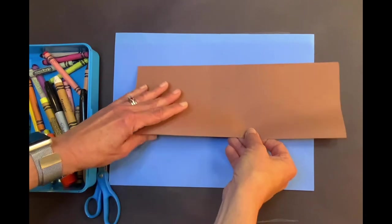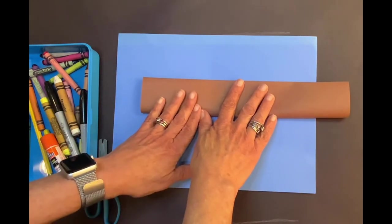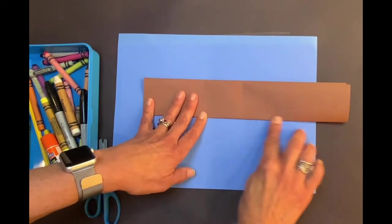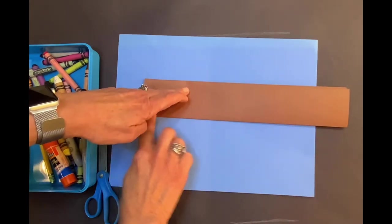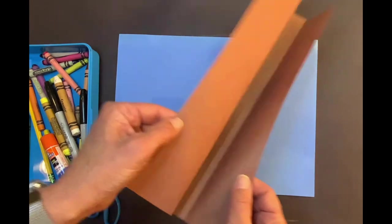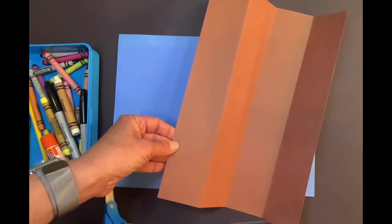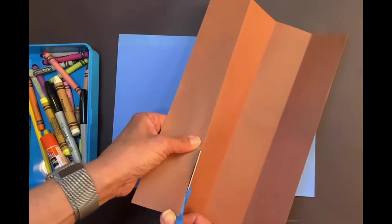We want to fold it one more time and this will be in fourths. So the bottom will come back and meet the top. Match the corners and press that line so you can see it. We just need one long strip and then open it up and you'll see that your paper is divided into four parts. All you need is one. So I want you to cut on that line.